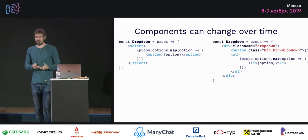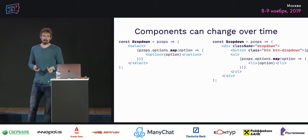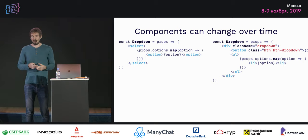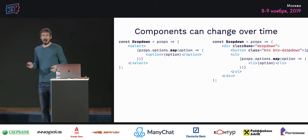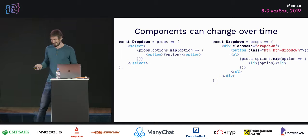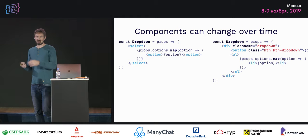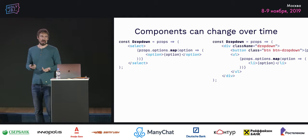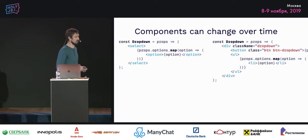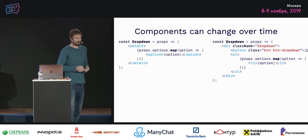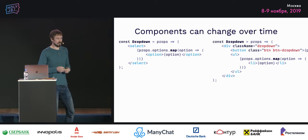Dropdowns are also getting easier. Instead of copy-pasting a lot of HTML, we just say Dropdown, Button, MenuItem, MenuItem. The cool thing is it's not only much easier to write, it's also much easier to read. Components can also change over time — in the first iteration of a dropdown we could have a normal select, but when the product manager wants the fancy dropdown, we just replace the implementation without changing any application code.